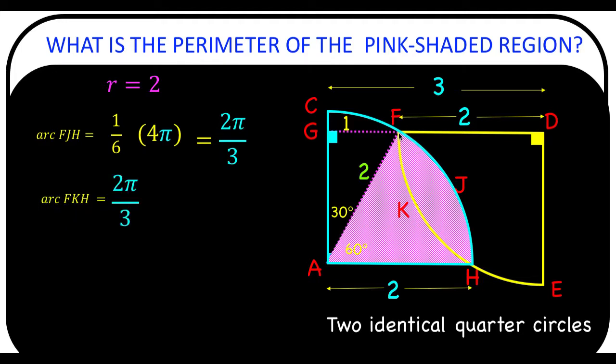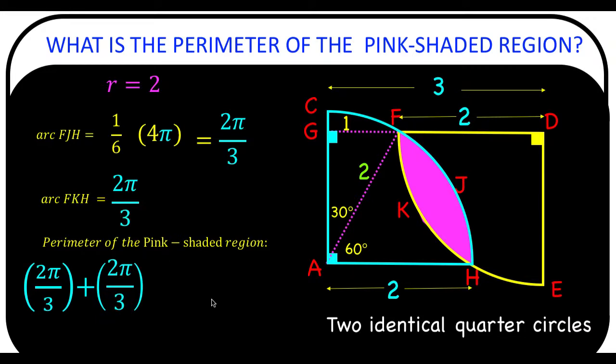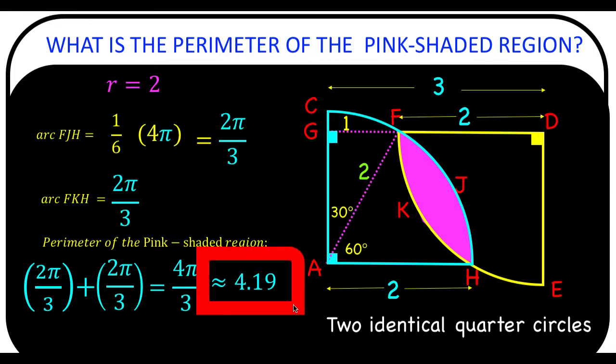And so if we want to find out the perimeter of this pink shaded region, we simply have to add the length of arc FH, which is 2π over three, and the length of the other arc FH, which is also 2π over three. And so the perimeter now of the pink shaded region is the sum of these two arcs, which is 4π over three. And this is approximately equal to 4.19 units. And this is now our final answer.